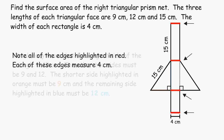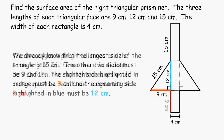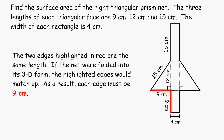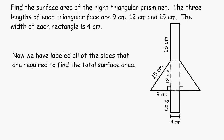We still have to label the other two sides of our triangle. I highlighted the shorter side in orange and the longer side in blue. The shorter side must be 9 centimeters, and the other side must be 12 centimeters. We can conclude that the edge length of our rectangle at the bottom must be 9 centimeters, because if we fold this net into its 3D form, the edge of that rectangle will line up with the edge of the triangle that is also 9 centimeters in length. Now we have labeled all of our sides required to find the total surface area.